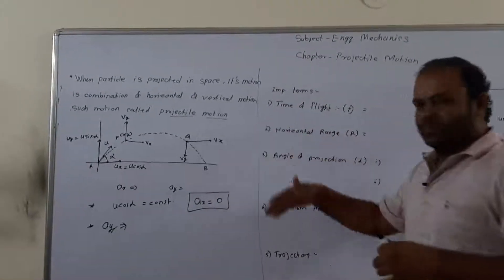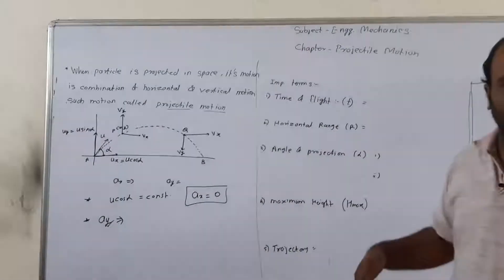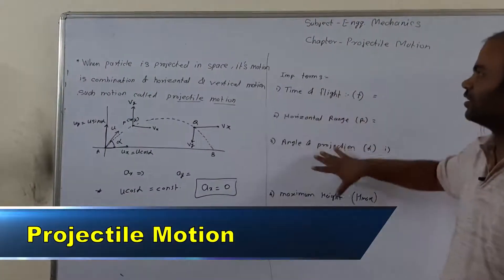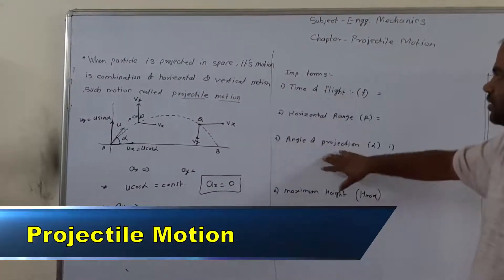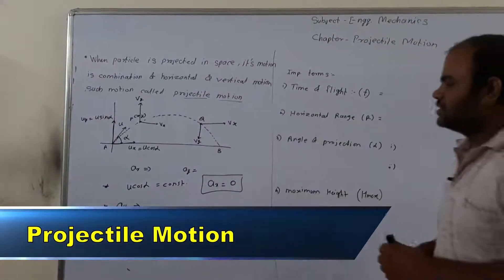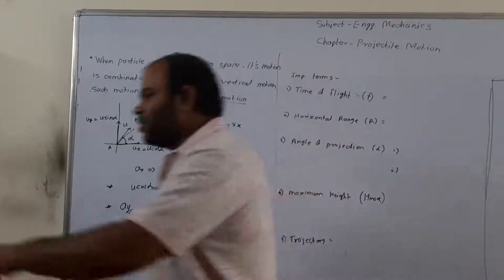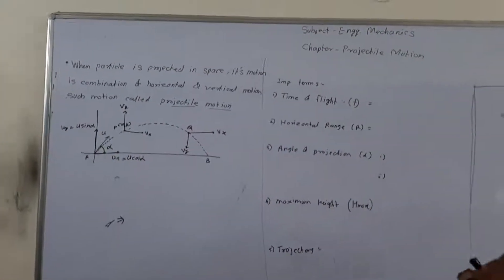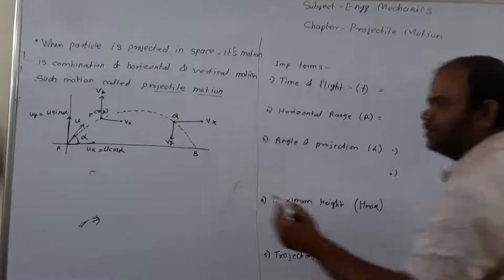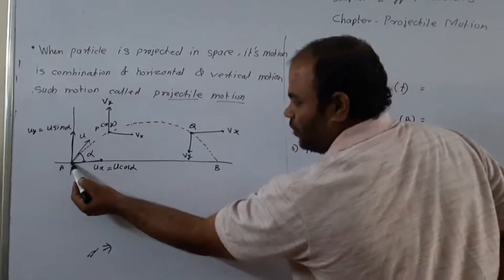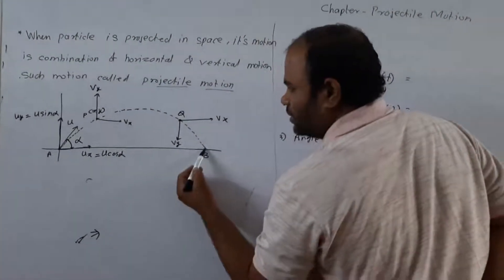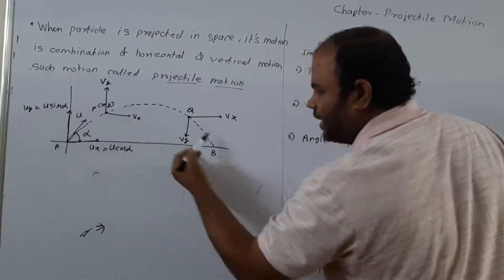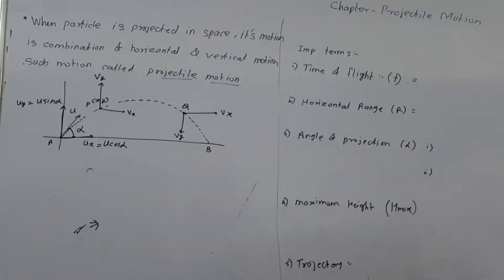Before starting numerical problems we need to study some important terms. The first important term is time of flight. Time of flight is the total time the projectile, projected from point A, remains in space before reaching point B.